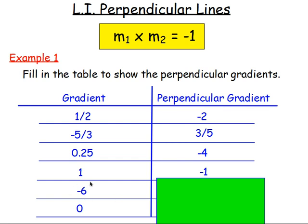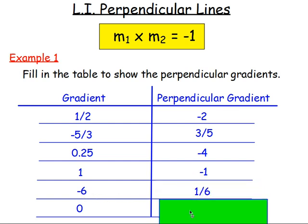If you've got negative six and want to work out the perpendicular gradient, when it's just a whole number you're best imagining it as a fraction, putting it over one. So negative six over one — turn that upside down, you get one over six. The negative gradient then becomes positive, giving positive one over six.